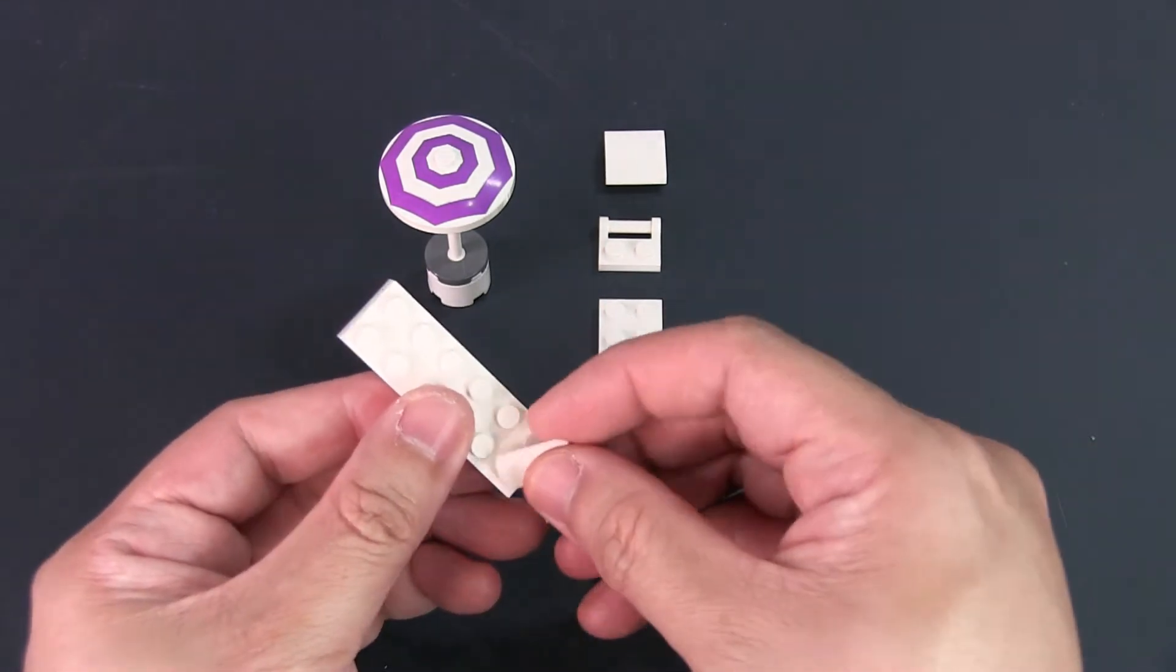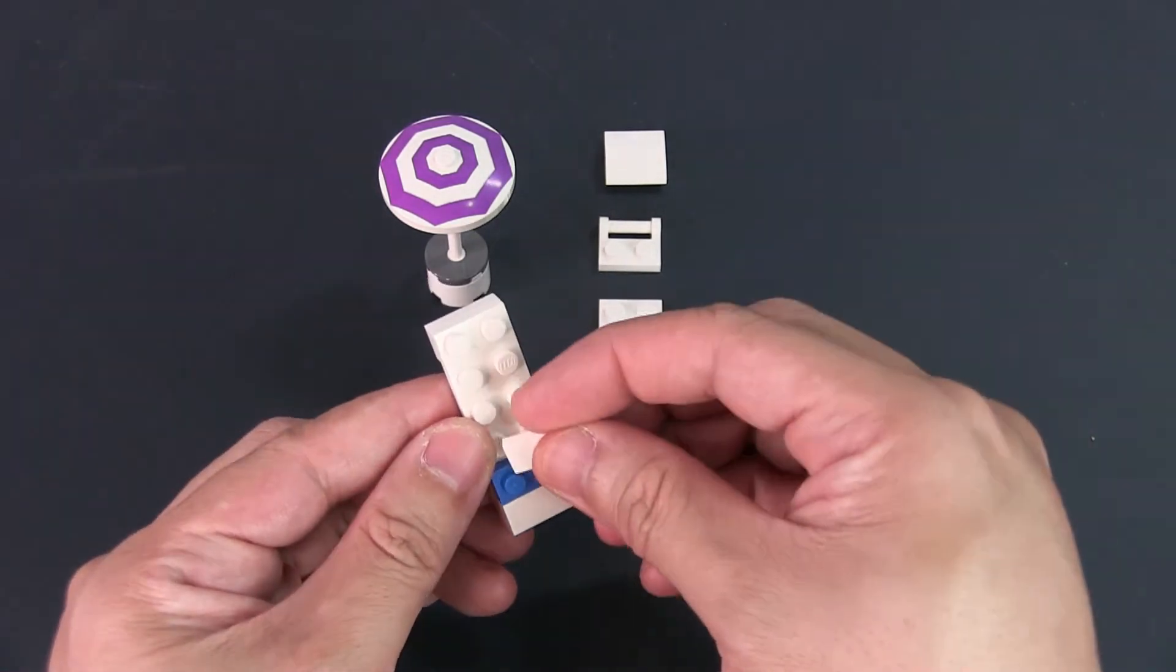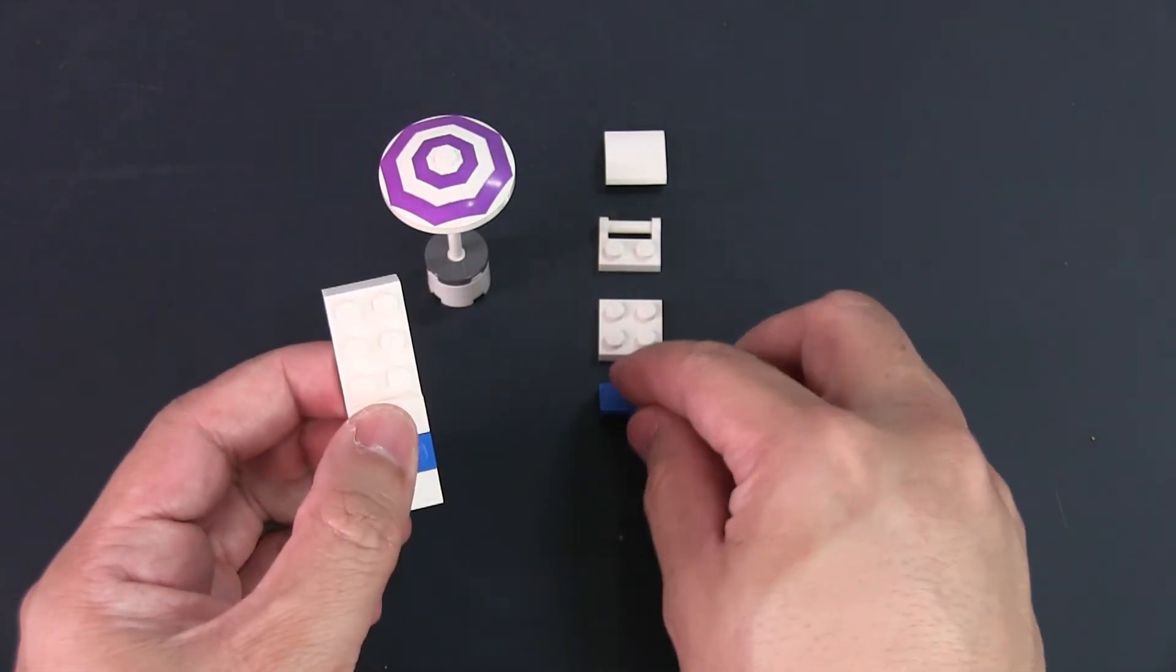You will now form the top of the beach chair by alternating the 1x2 elements just like this. The lone 1x2 coloured plate is for you to attach a minifig to.